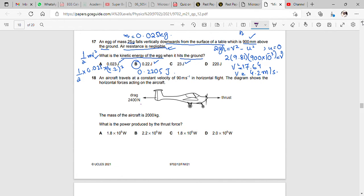An aircraft travels at a constant velocity of 90 meters per second in horizontal flight. The diagram shows the horizontal forces acting on the aircraft. In horizontal forces, what is the thrust?